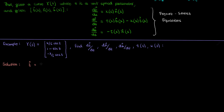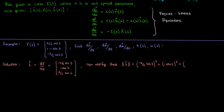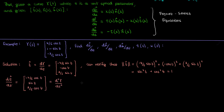We start by finding the tangent vector, which is the rate of change of gamma with respect to t. Evaluating the derivatives of each component gives us the tangent vector. We can verify it is a unit vector by computing its magnitude — using the identity sine squared plus cosine squared equals 1 — confirming that gamma is a unit speed curve with unit speed parameter t, since the magnitude of its tangent is 1. The rate of change of this tangent vector is just its derivative, which is the second derivative of gamma of t, and its magnitude is also 1.